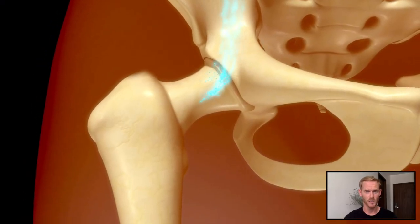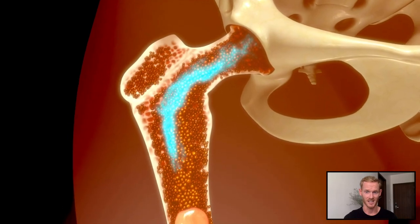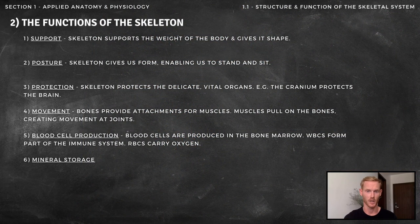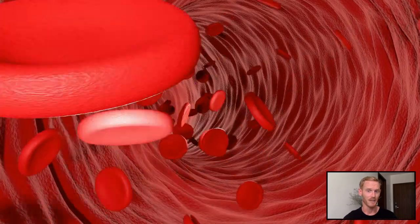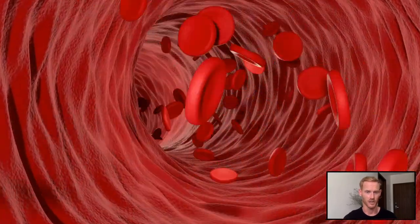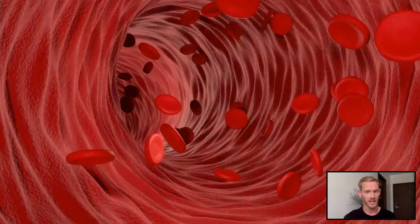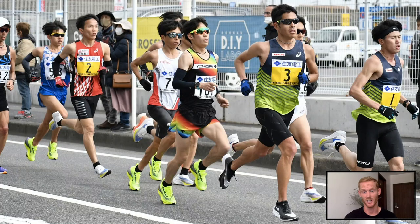The skeleton is also involved in the production of blood cells, as it contains bone marrow, which is the site of blood cell production. White blood cells form part of the immune system, helping to destroy pathogens like bacteria, while red blood cells contain haemoglobin and carry oxygen to the body's tissues. For example, red blood cell production allows a marathon runner, who relies on the efficient delivery of oxygen to their muscles, to continue exercising for long periods of time without tiring.